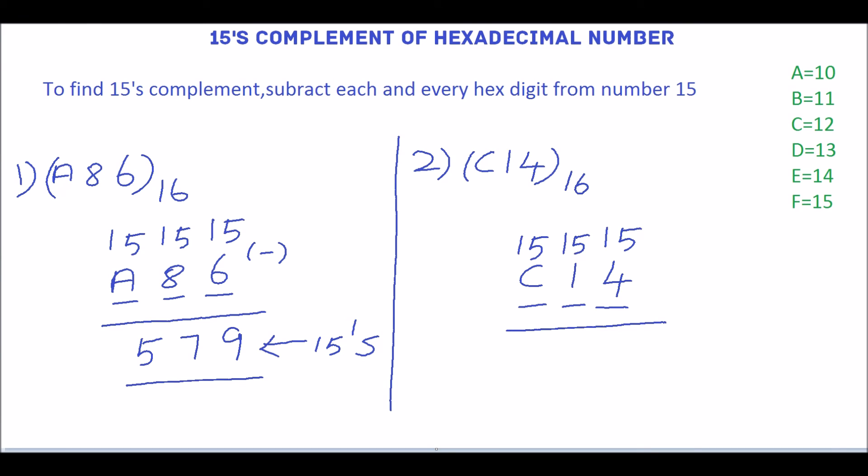So 15 minus 4 is 11. 11 is equivalent of B. 15 minus 1 is 14, which is equivalent of E. 15 minus C, C is equivalent of 12. So 15 minus 12 is 3. So 3 E B is 15's complement of the hexadecimal number C, 1, 4.